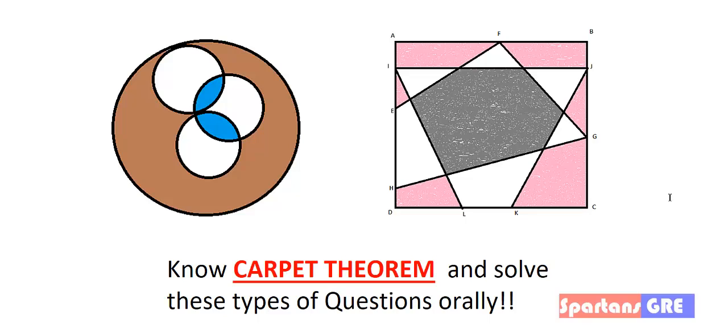The Carpet Theorem states that the overlap area will be equal to the free space area, provided that the sum of the individual parts' areas is equal to the total area.